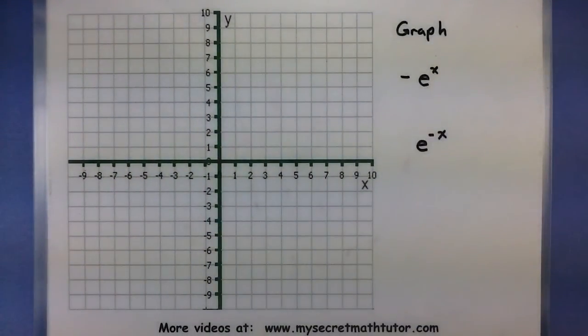For my example, we are going to graph -e^x and e^(-x). In both of these examples, I would consider my parent function e^x, so I'm going to start off by graphing that.